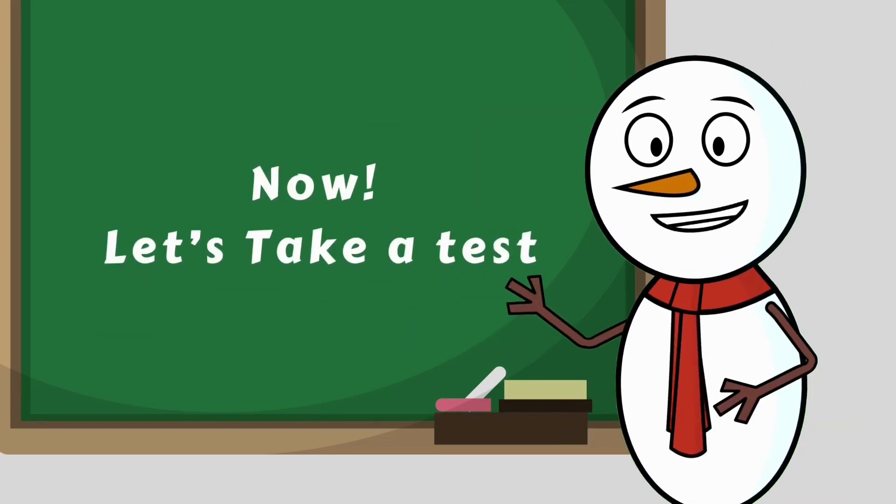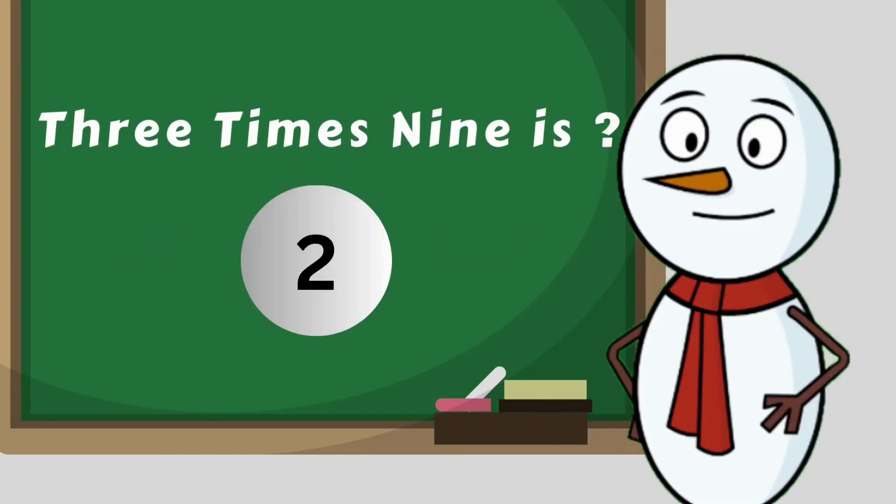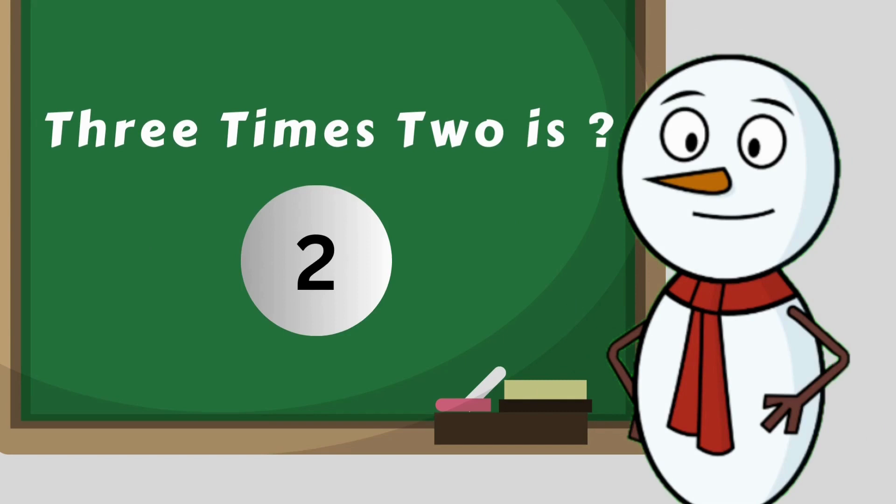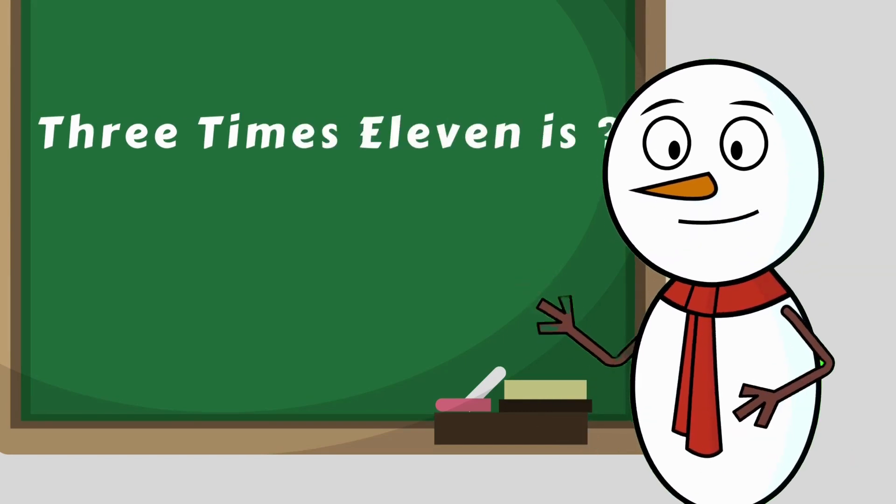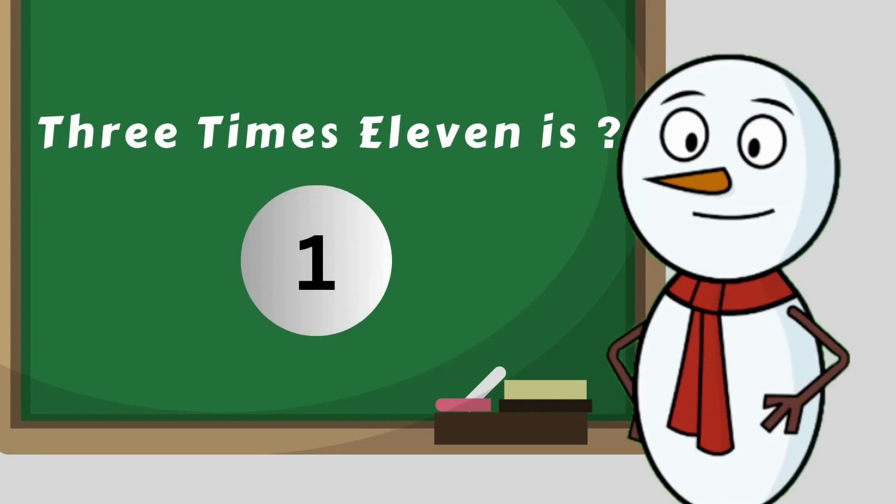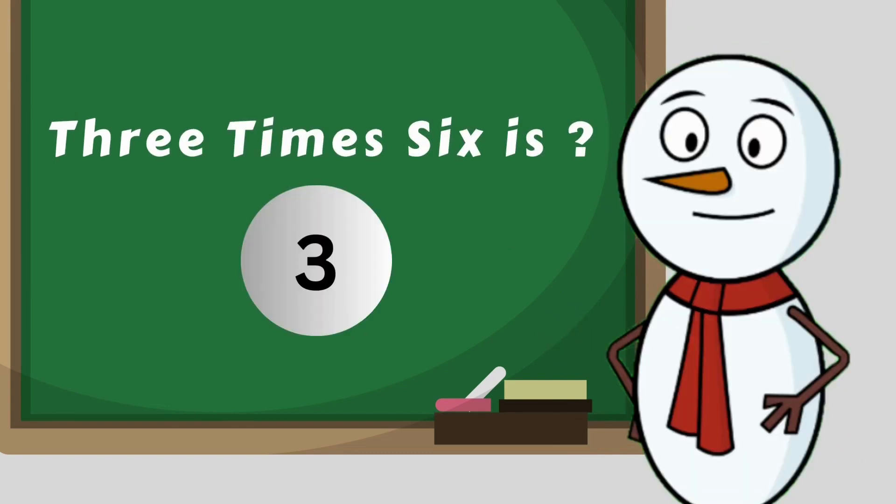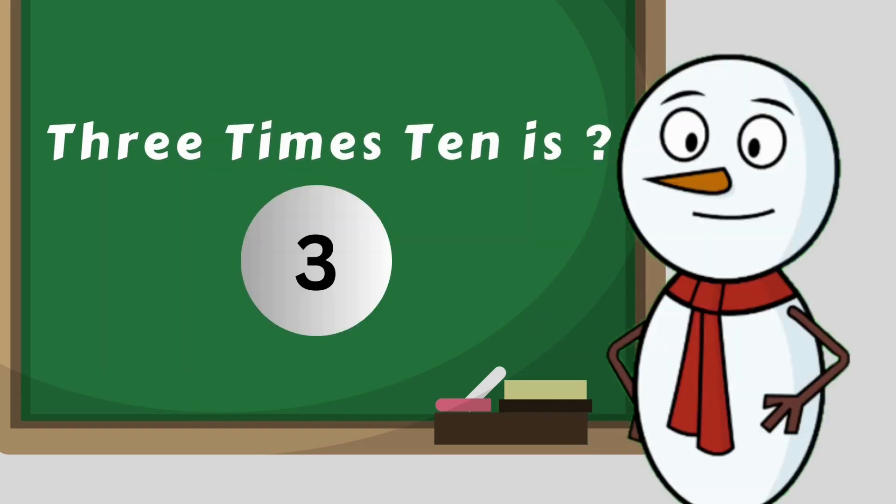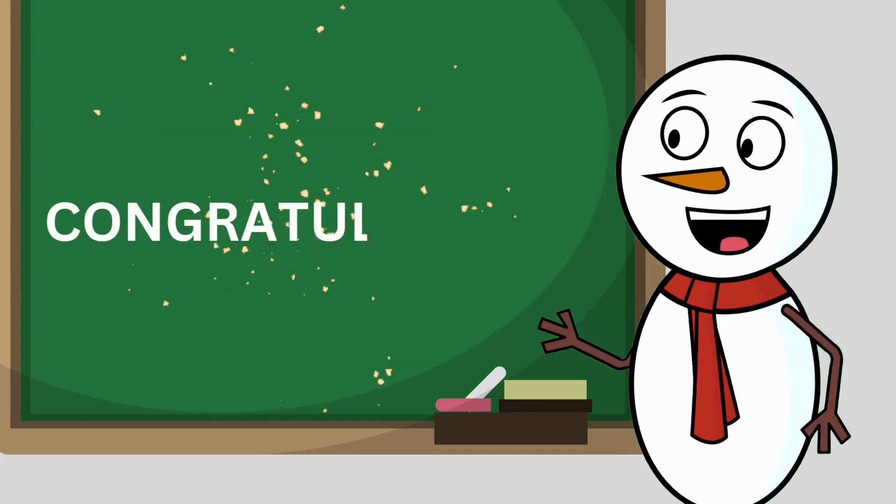Now, let's take a test. 3 times 11 is... 33. 3 times 12 is... 36. 3 times 6 is... 18. 3 times 10 is... 30. Congratulations. You have learned the table of three.